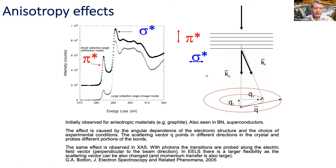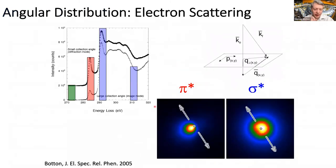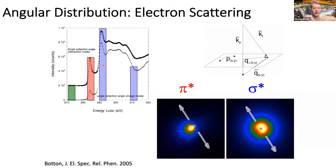Looking in reciprocal space at the angular distribution of scattering at a given energy loss, you can see transitions into unoccupied states. Taking a diffraction pattern focused on pi-state transitions and another on sigma-state transitions, with the sample orientation chosen to break symmetry, you see in reciprocal space the transition to pi* states in one direction, and a few electron volts higher you see sigma* transitions. The center dot is the forward direction. You directly see the anisotropy in electron scattering with your own eyes.